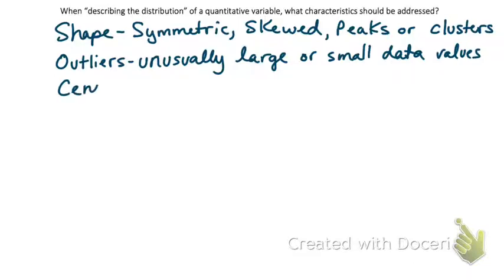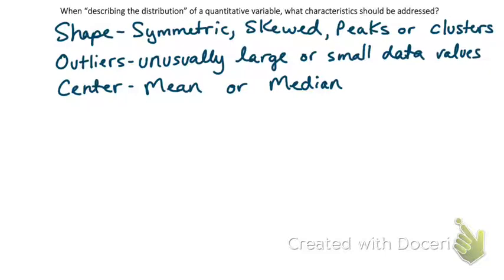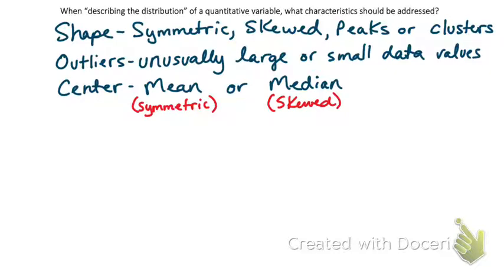We're going to talk about the center of the distribution. There are two different ways: one is the average, the mean. But the other way is the median — the middle number. Depending on the shape of the data, we decide which one to use. For a symmetric distribution, we'll most often use the mean. For a skewed distribution, we'll probably want to use the median. We'll talk about why later.